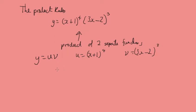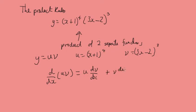To differentiate the product of two functions, we need the product rule. The product rule states: d by dx of u times v equals u times dv by dx, plus v times du by dx. In other words, the derivative is the first function multiplied by the derivative of the second, plus the second function multiplied by the derivative of the first.